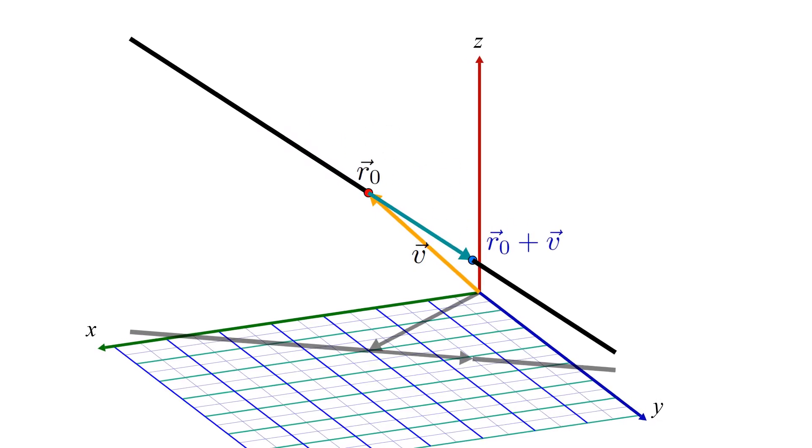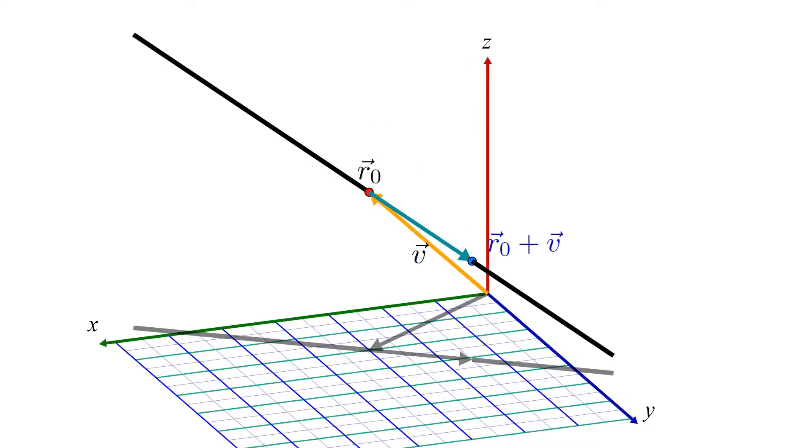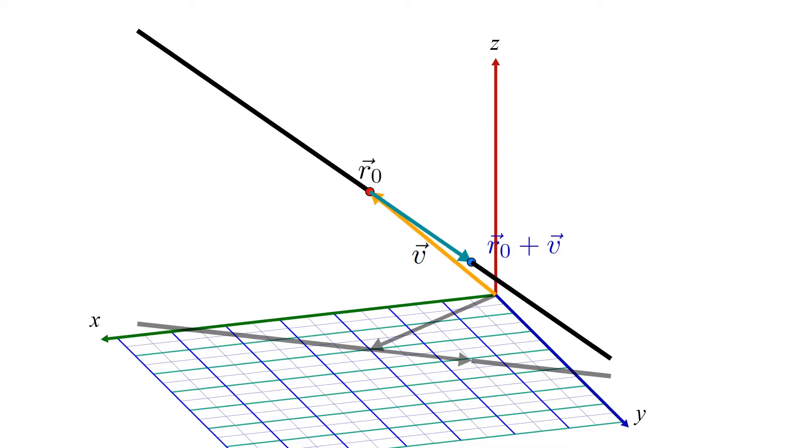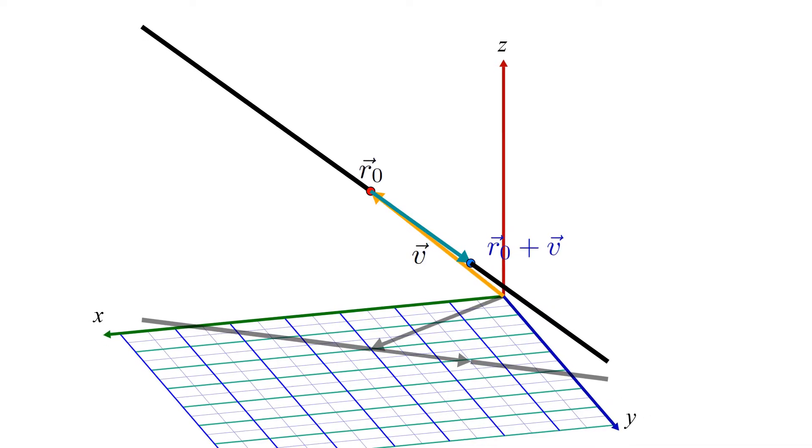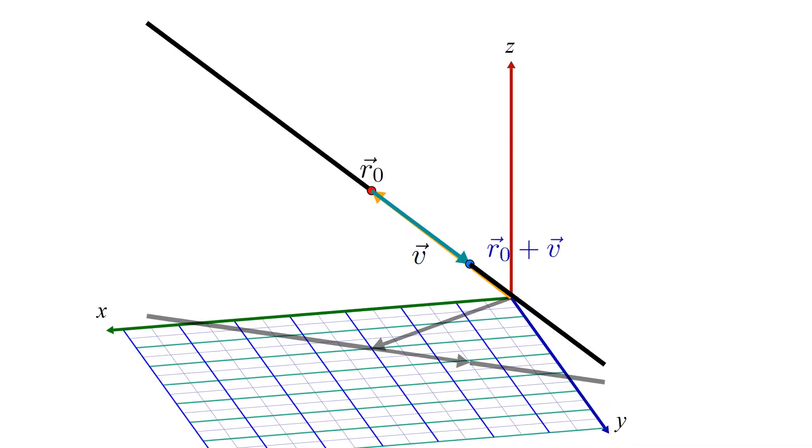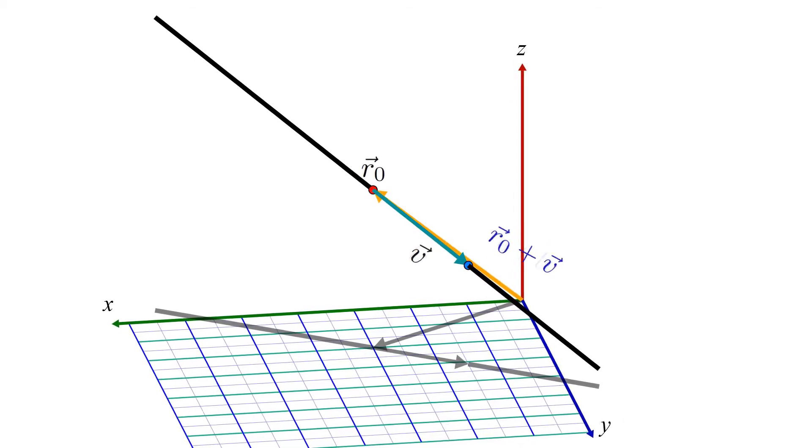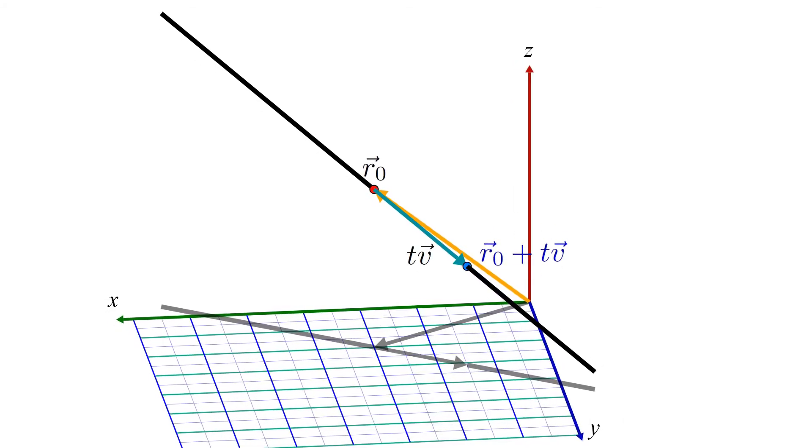All this is to say that we can scale v by any factor we want, and it still defines the same line, but gives us a different point on the line. We can characterize all of these different scaled versions of the v vector by multiplying it by a scalar, which we will call t.